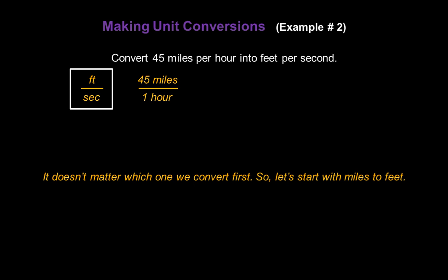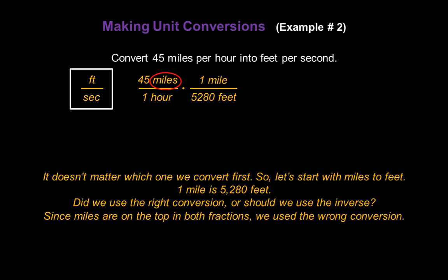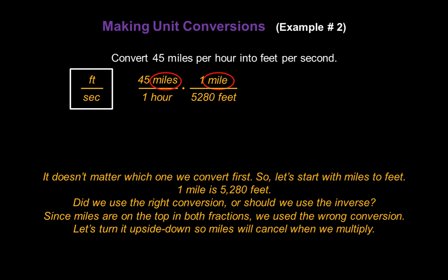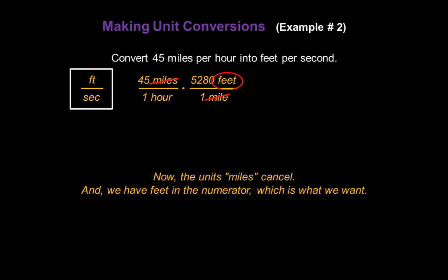It doesn't matter which one we convert first, so I'm going to start with miles to feet. One mile is 5,280 feet, so let's multiply by one mile over 5,280 feet. Did we use the right conversion here, or should we use the inverse — 5,280 feet over one mile? Since miles are on the top in both fractions, we used the wrong conversion. Let's turn it upside down so miles will cancel when we multiply: I'll put 5,280 feet over one mile. Now the units miles do cancel in the numerator and denominator, and we have feet in the numerator, which is exactly what we want.